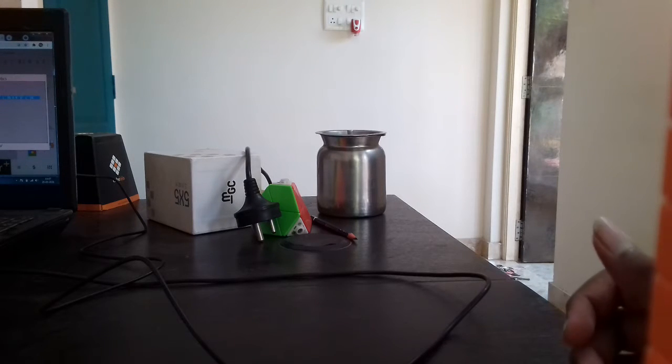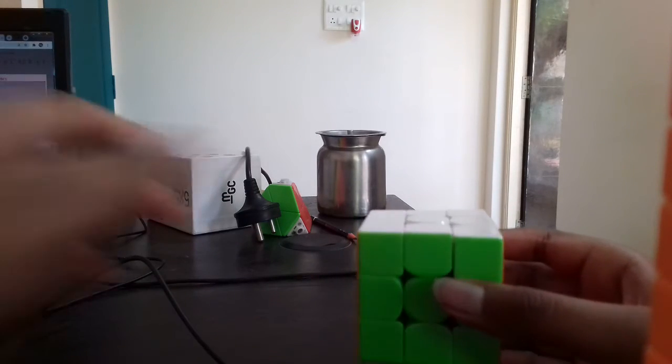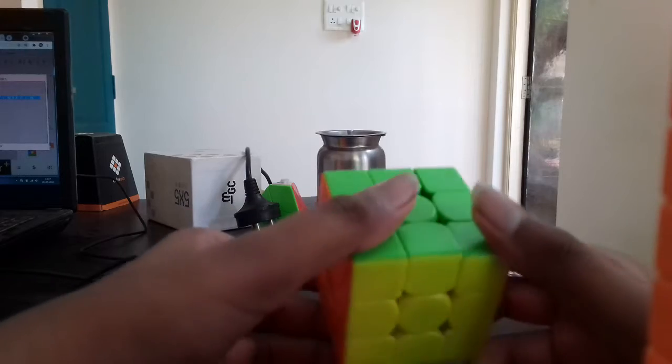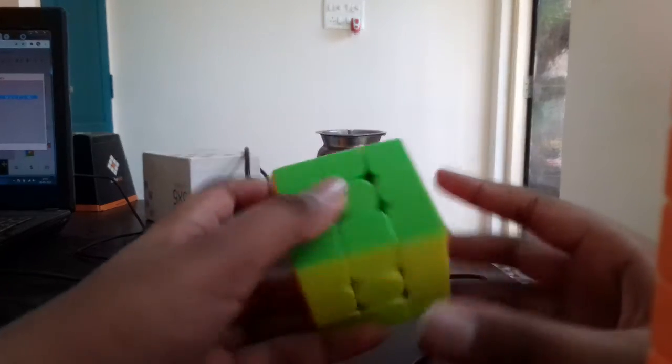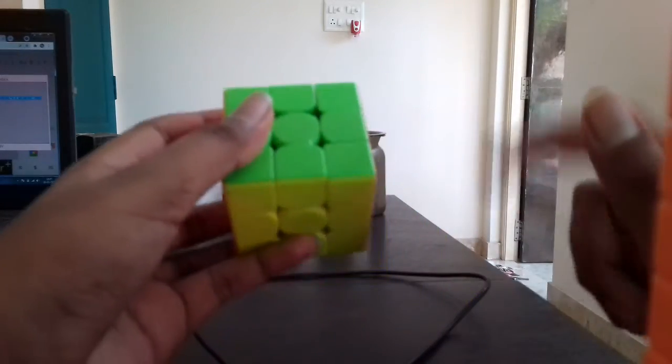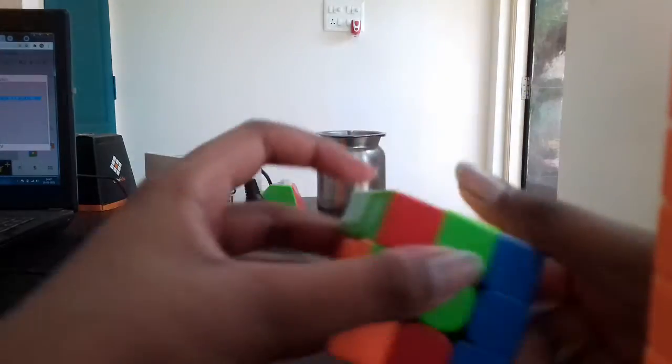Anyways, in this video I'm reconstructing my 3x3 PB single that I got about 2 days ago. This was a 6.835. This is a very easy cross for me, but the F2L wasn't really that efficient. The scramble will be in the description and I'll try to put it on screen, but mostly will be in the description.